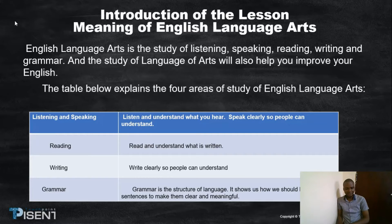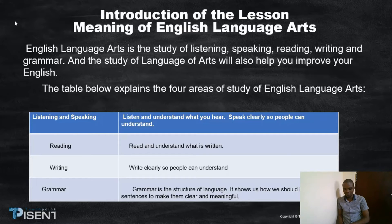Two: reading — read and understand what is written. Three: writing — write clearly so people can understand. Four: grammar. Grammar is the structure of language. It shows us how we should read sentences to make them clear and meaningful.